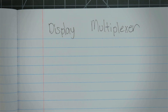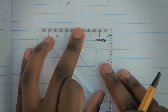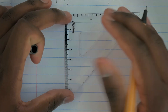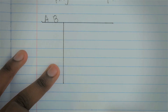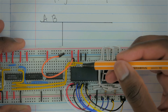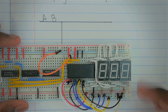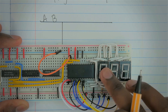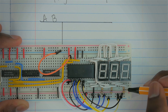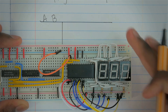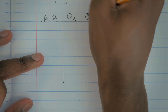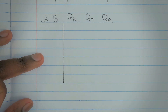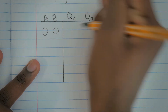This is going to be our display multiplexer circuit. The first thing to do when designing a circuit is start with the truth table. Our inputs A and B correspond to these yellow wires. Our outputs are going to be the three displays — specifically, which of them connects to power: Q_hundreds, Q_tens, and Q_ones.